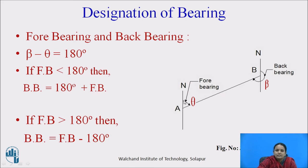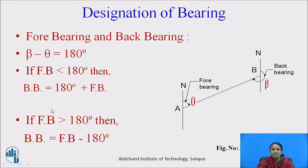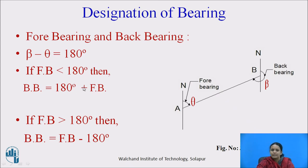The relation between fore bearing and back bearing is plus or minus 180 degrees. If the fore bearing is less than 180 degrees, then the back bearing equals 180 degrees plus fore bearing. If the fore bearing is greater than 180 degrees, then the back bearing equals fore bearing minus 180 degrees. So for one survey line you will get two bearings: fore bearing and back bearing.